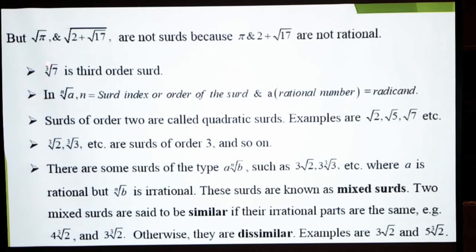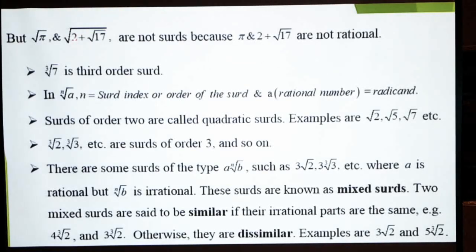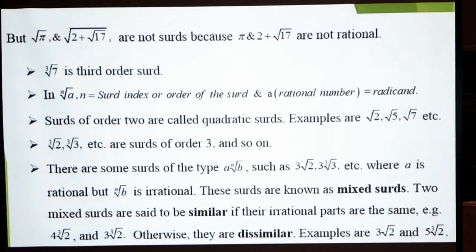اچھا اب یہ بھی نوٹ کریں — جس طرح π ایک irrational number ہے، تو اگر square root میں آپ کے پاس irrational number موجود ہے تو وہ surd نہیں کہلاتا۔ π under the root surd اس لئے نہیں ہے کہ π irrational number ہے۔ اسی طرح 2 + √17 whole under the root میں — اس میں √17 irrational number ہے — اس وجہ سے یہ بھی surd نہیں ہوگا۔ تو نہ π under the root اور نہ ہی 2 + √17 whole under the root سرڈ ہے — are not surds because π and 2 + √17 are not rational.